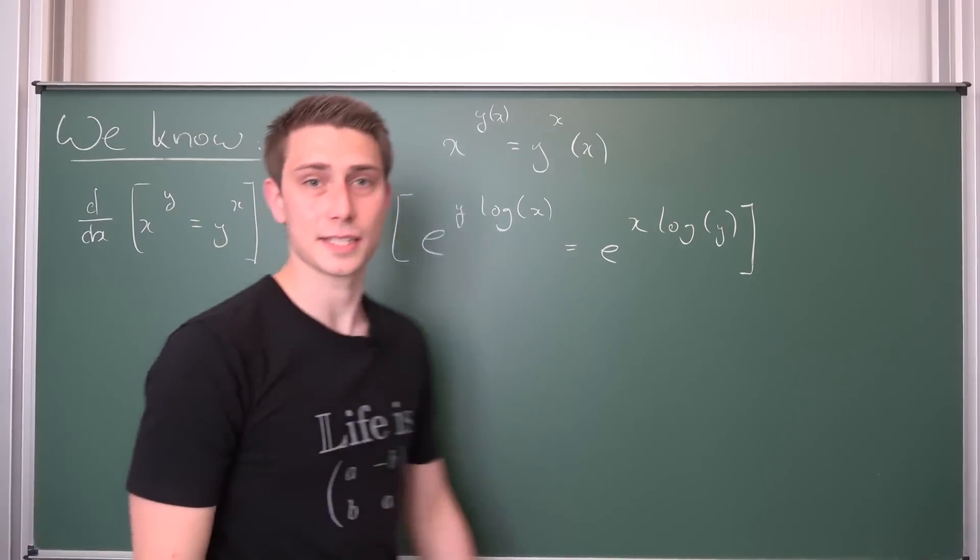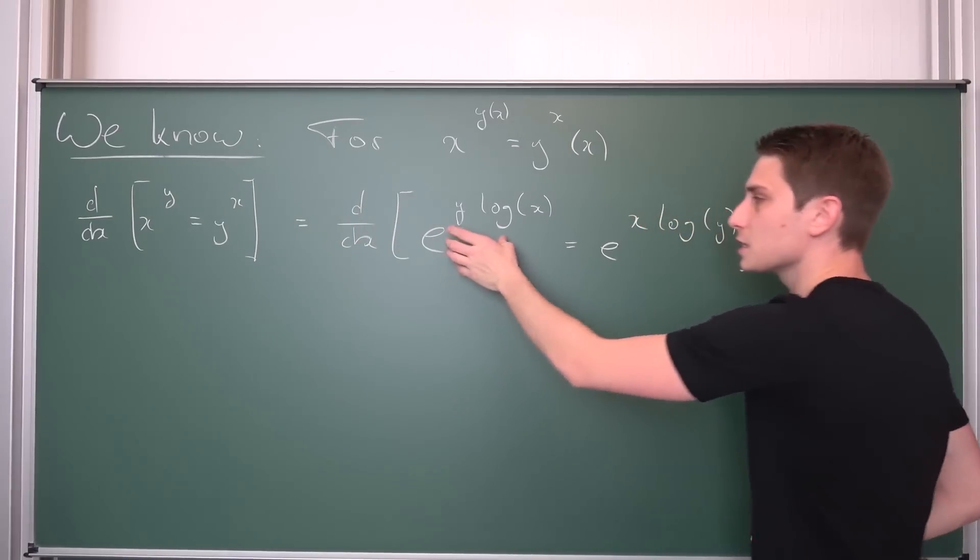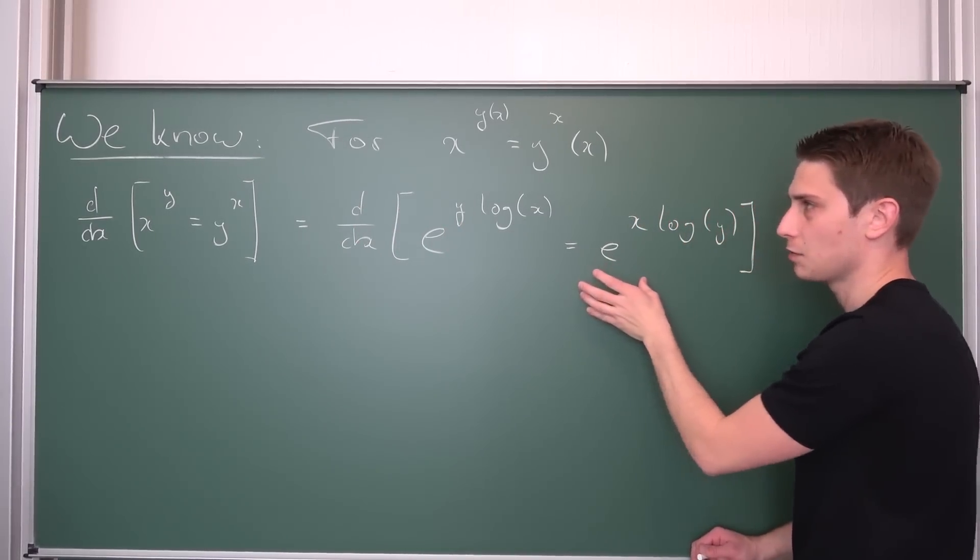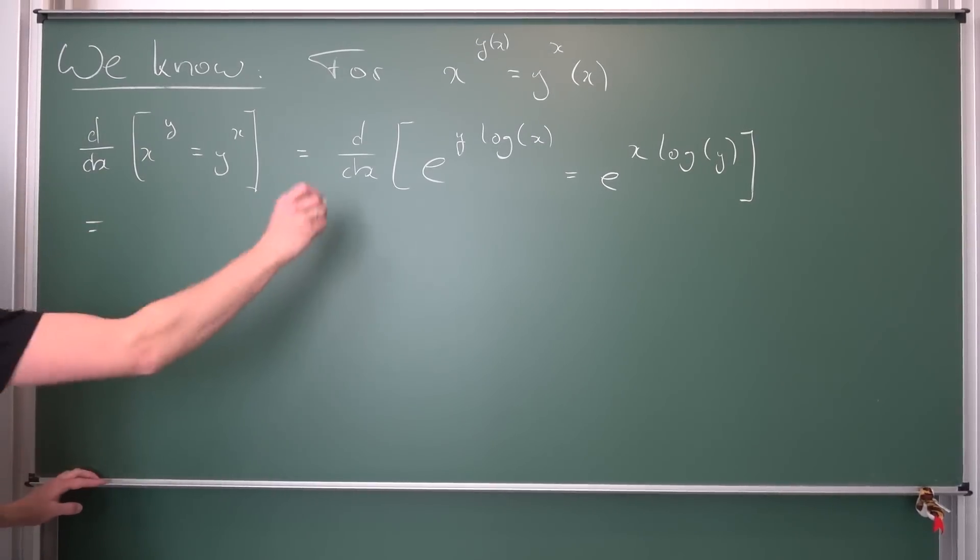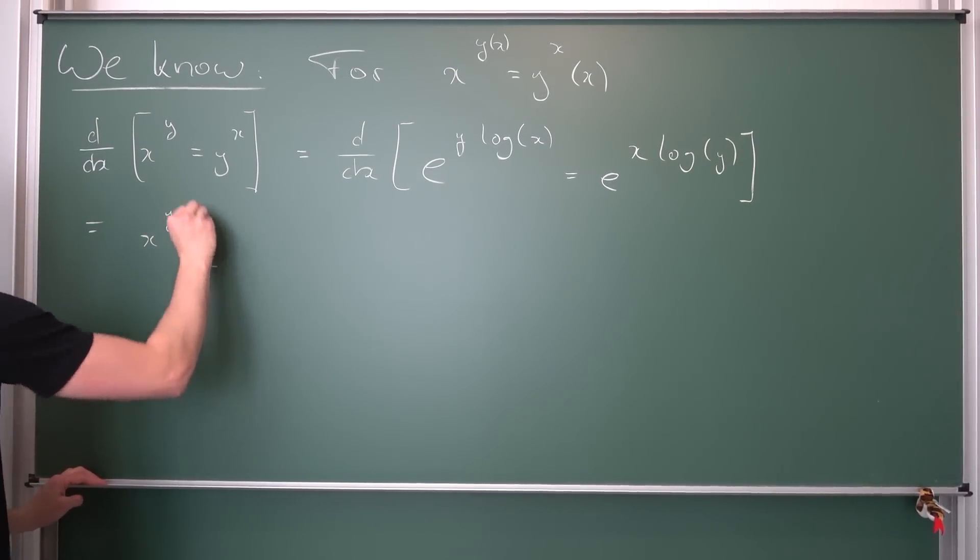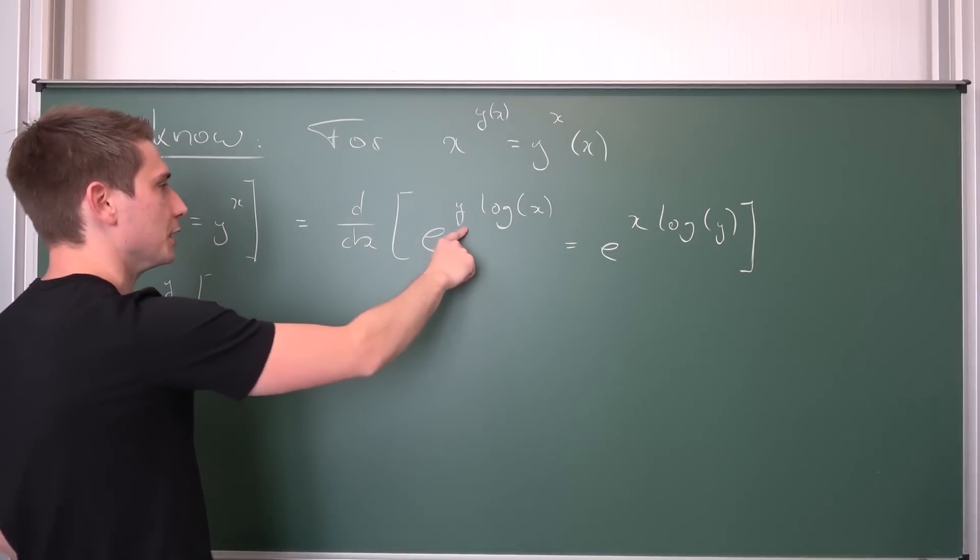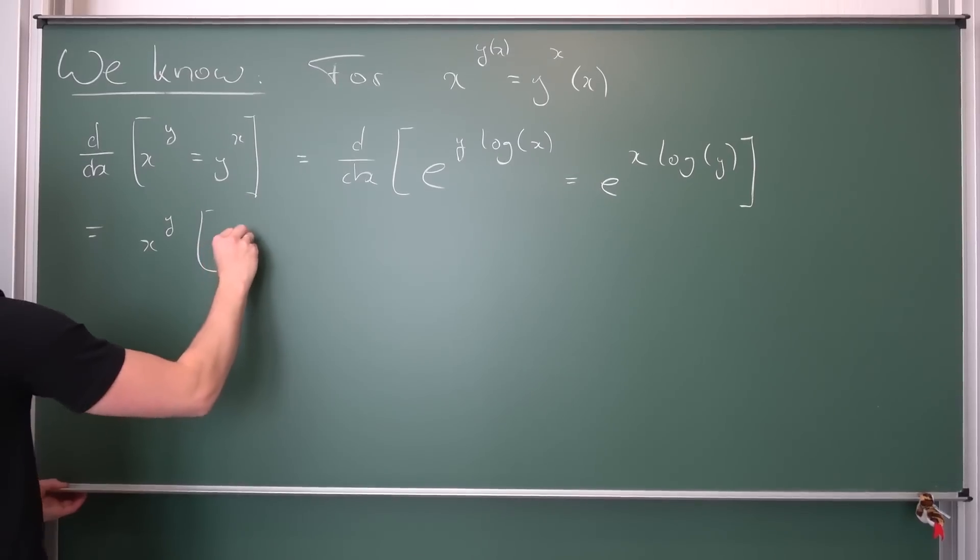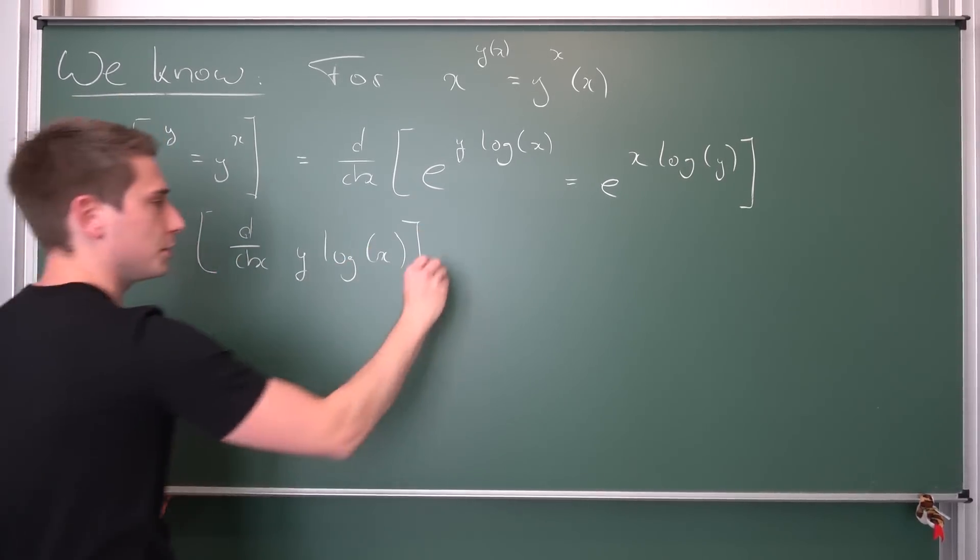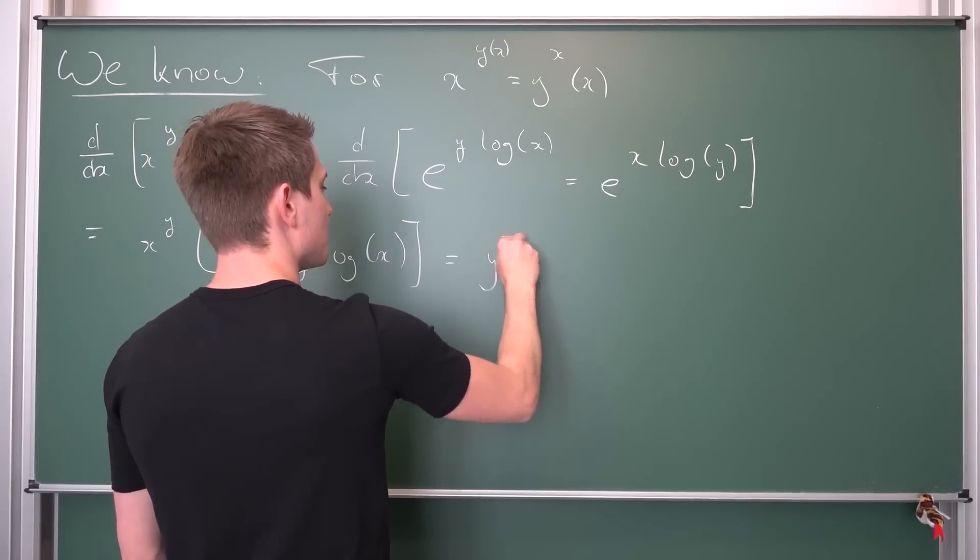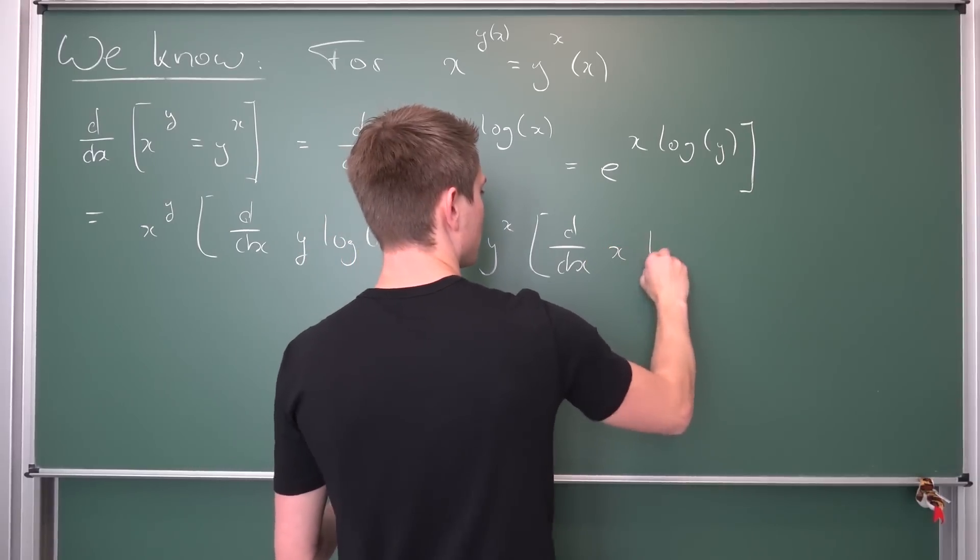Now we can start differentiating both sides and see what we actually get. If we differentiate both sides, then the exponential function is going to be preserved on each side. But the exponential function here is nothing but either x to the y or y to the x. Meaning overall, we are going to get x to the y on the side preserved, times the derivative of the inner thing, just using chain rule here. Derivative of y times log of x. And the same on the other side: y to the x power times the derivative d/dx of x times log of y.